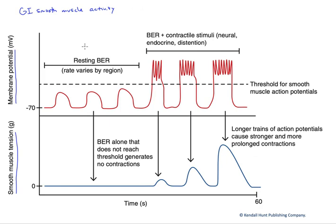These interstitial cells of Cajal are electrically coupled to the smooth muscle cells and initiate their contractions at a particular rhythm and in a particular strength. Those interstitial cells generate what's called a basal electrical rhythm. They're firing at a particular rate over time.